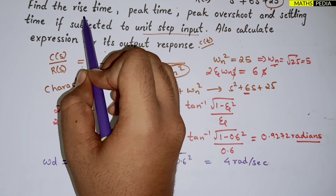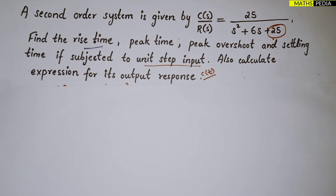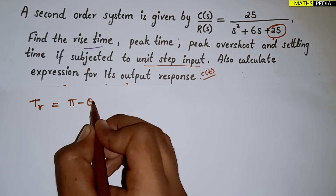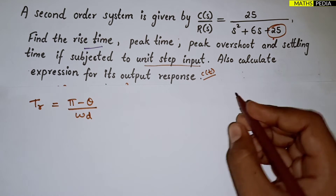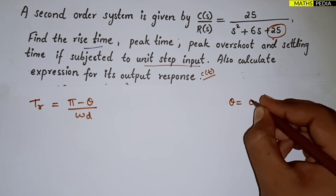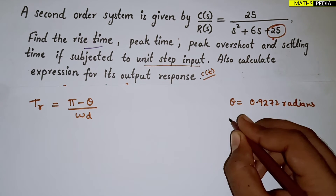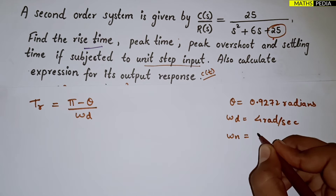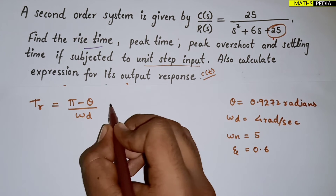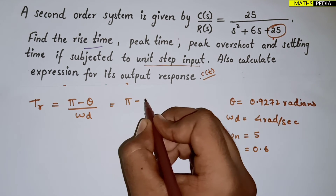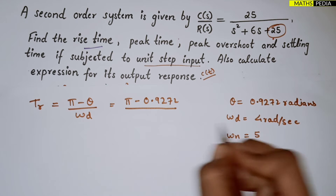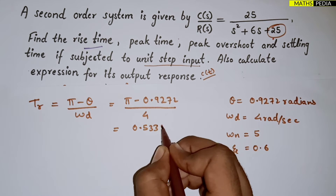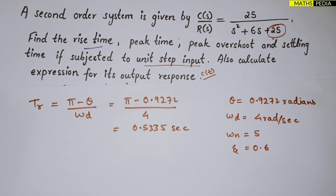Now we go for rise time. The formula for rise time Tr is (π - θ) / ωd. With θ = 0.9272 radians and ωd = 4 radians per second, Tr = (π - 0.9272) / 4. Putting it in the calculator, we get Tr = 0.5335 seconds. All time specifications will be in seconds.